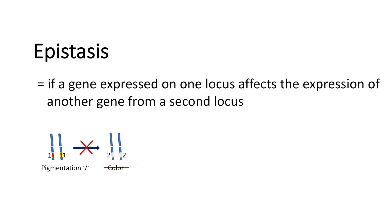If we have a deleterious mutation on the pigmentation allele, so we have no pigmentation anymore, the color from the second locus is also not expressed. To summarize: if one gene expressed on one locus affects the expression of another gene from a second locus, we call it epistasis.